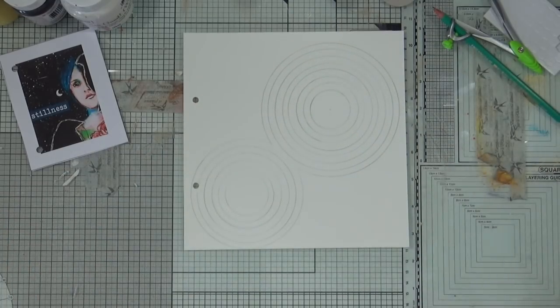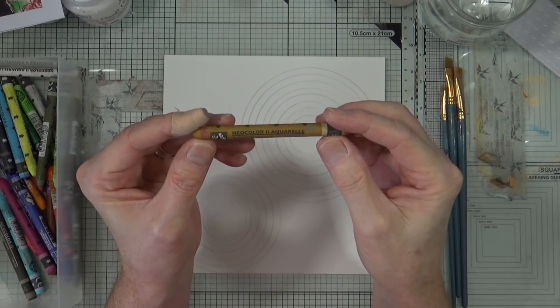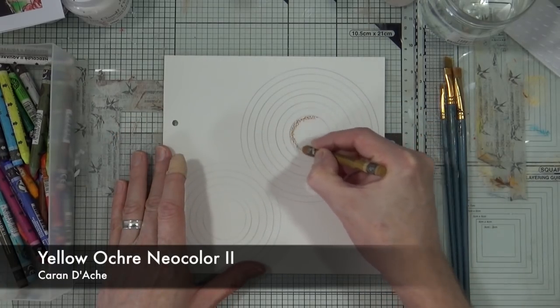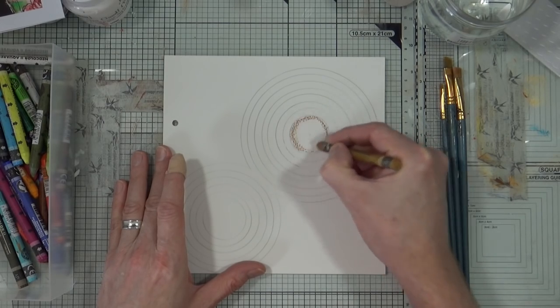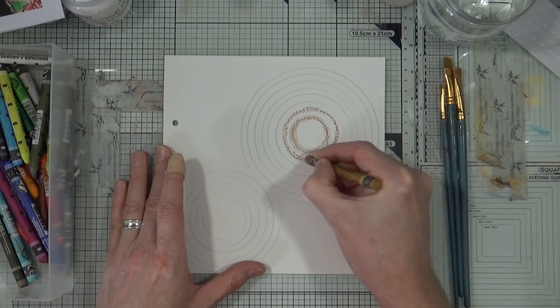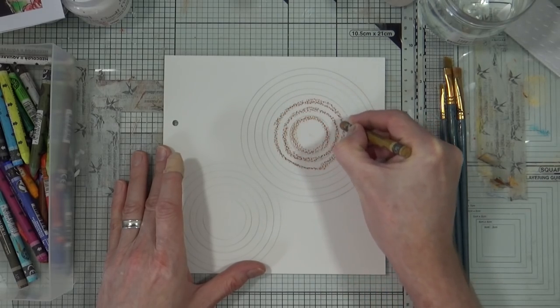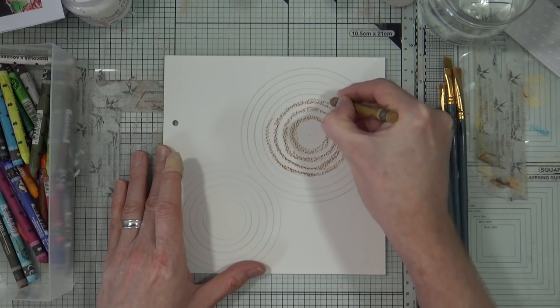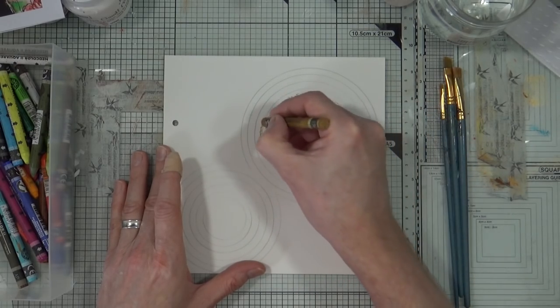It's now time to get out the watercolors. In this case it's the neocolors and I'm going to start off with yellow ochre. I'm going to just draw around all the concentric circles that I've already done with the yellow ochre neocolor. This is a little bit repetitive so I will just show you the first few and then jump to where I've completed the circles.